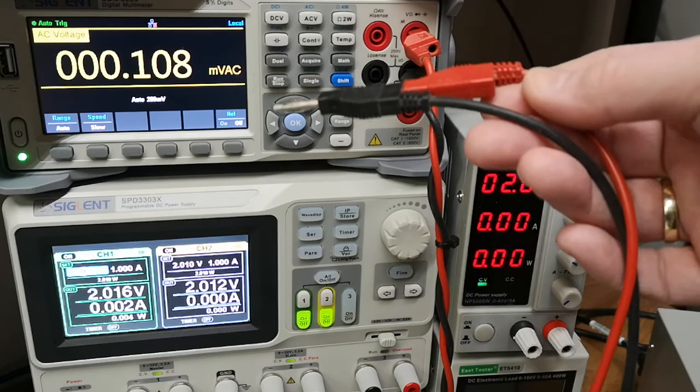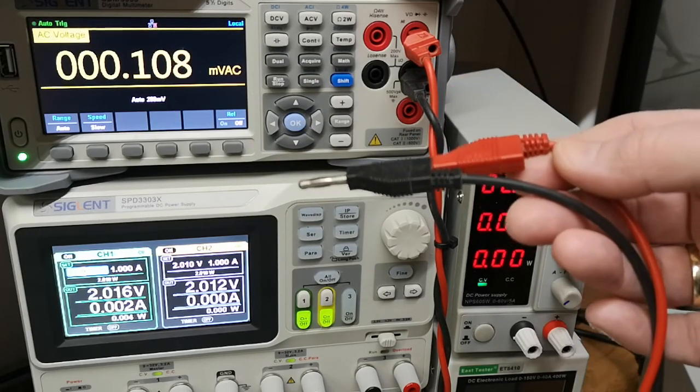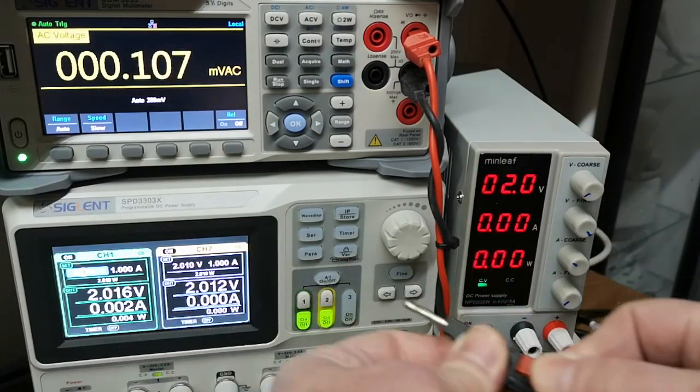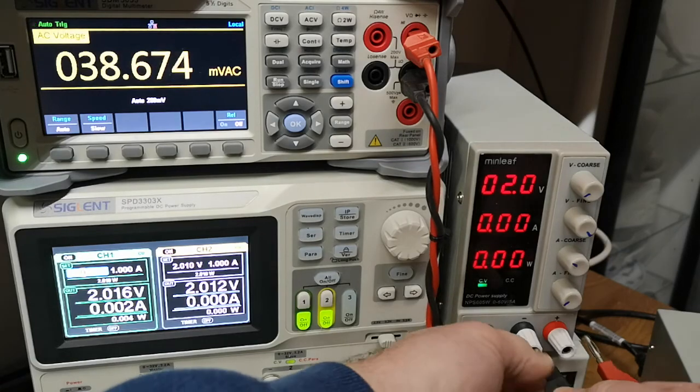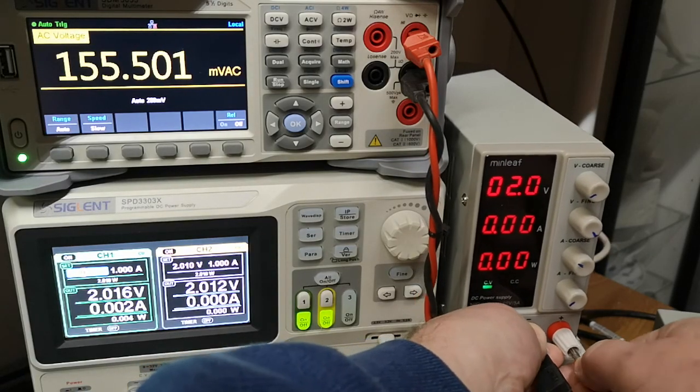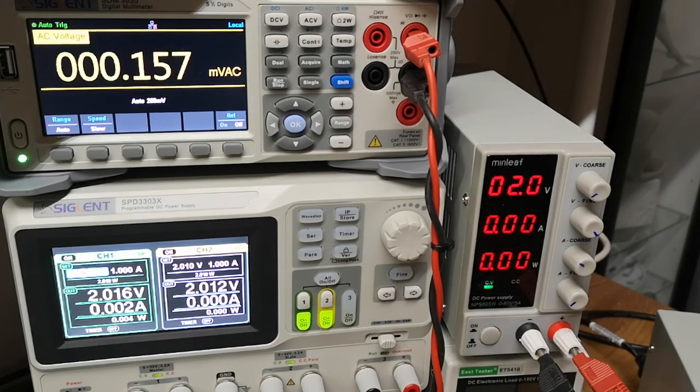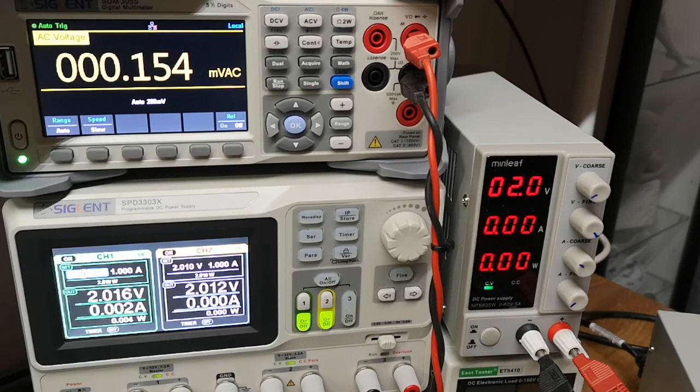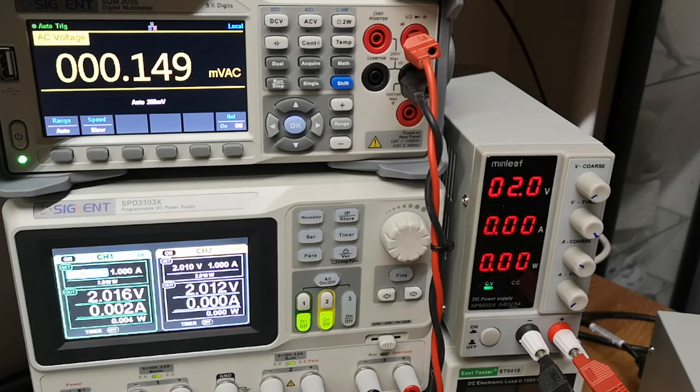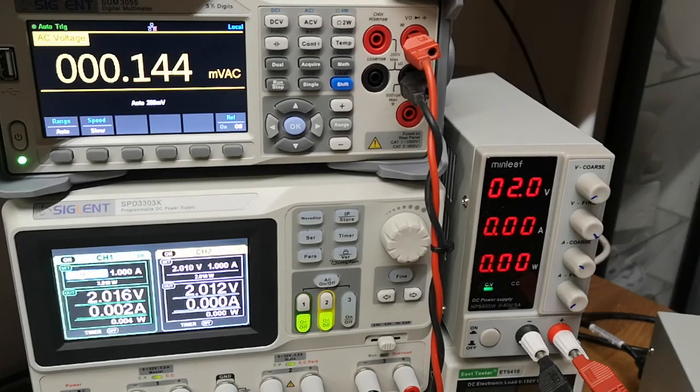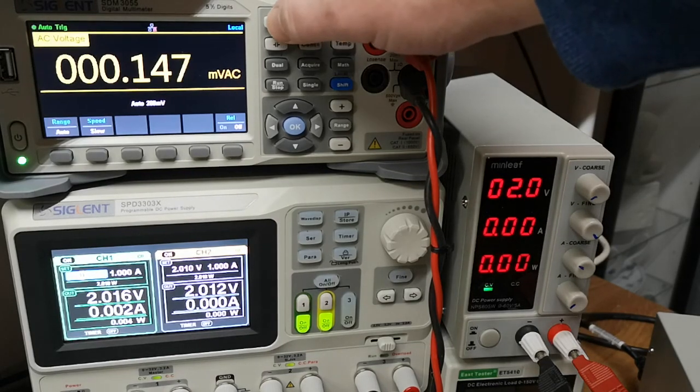That means any noise under this level we can't really measure because we have noise ourselves. Let's plug it back into the cheap one and have a look again. So it's fair to say the difference is 40 microvolts of RMS noise from this one. Let's look at the DC voltage.